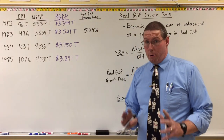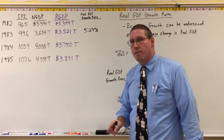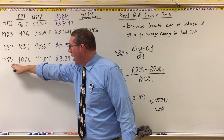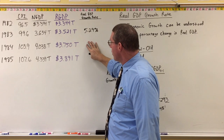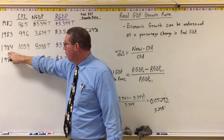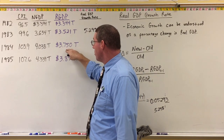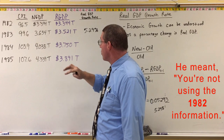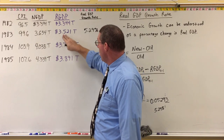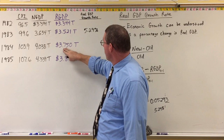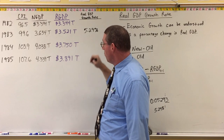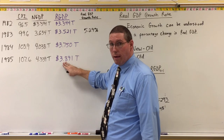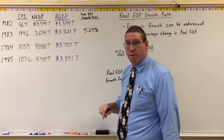So what I want you to now do is the exact same thing for 1984 and 1985. Identify the percentage increase from 83 to 84. Remember, with this one you're not doing the same thing as you did here — you're not using the 1984 information directly. We're only going one year at a time. So you're going to use the 1983 and 1984 numbers to determine the real GDP growth rate for 84. Then to do 1985, you're going to use the 1984 and 1985 numbers. Go ahead and pause the video and do that, and then I'll show you the answers.